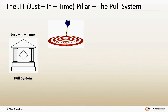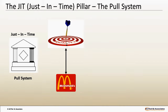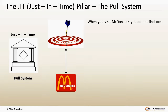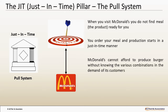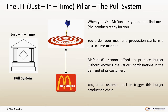Let's understand the pull system using the analogy of McDonald's burger. When you visit McDonald's, you do not find the meal ready for you. You order your meal and production starts in a just-in-time manner. McDonald's cannot afford to produce burgers without knowing the various combinations in the demand of its customers. The production of burger begins in the reverse direction — you, as a customer, pull or trigger this burger production chain. The same holds true in auto manufacturing. The customer demands can vary given the intense competition in the auto market, and an auto manufacturing company cannot afford to produce vehicles without incorporating customer demand as quickly and efficiently as possible.